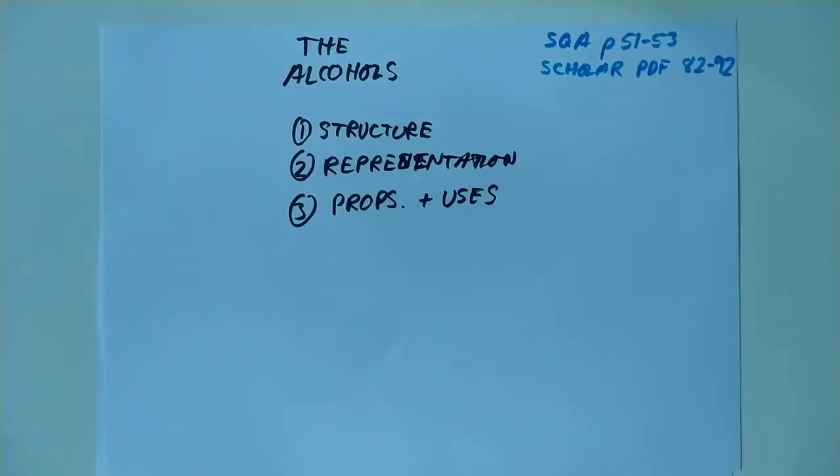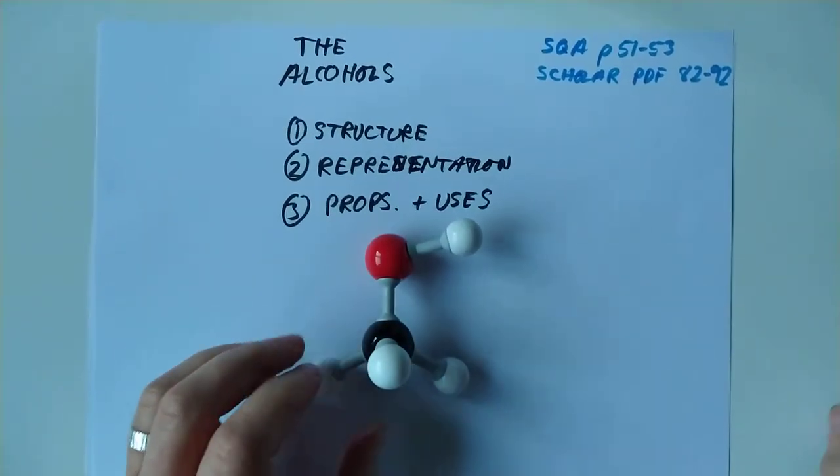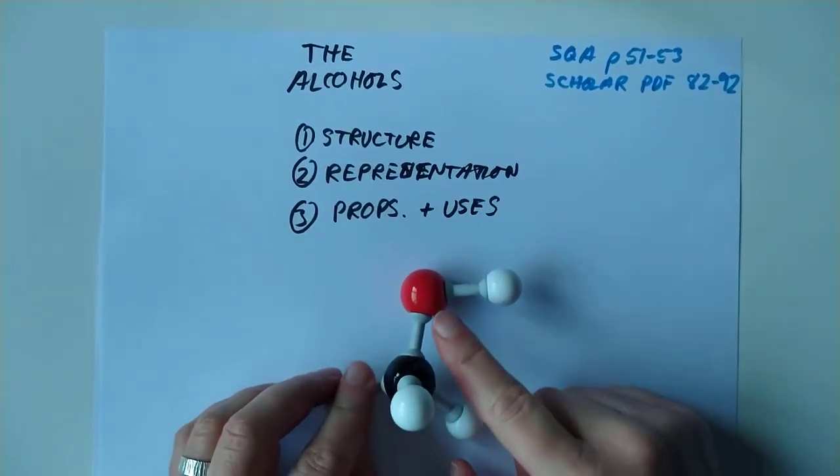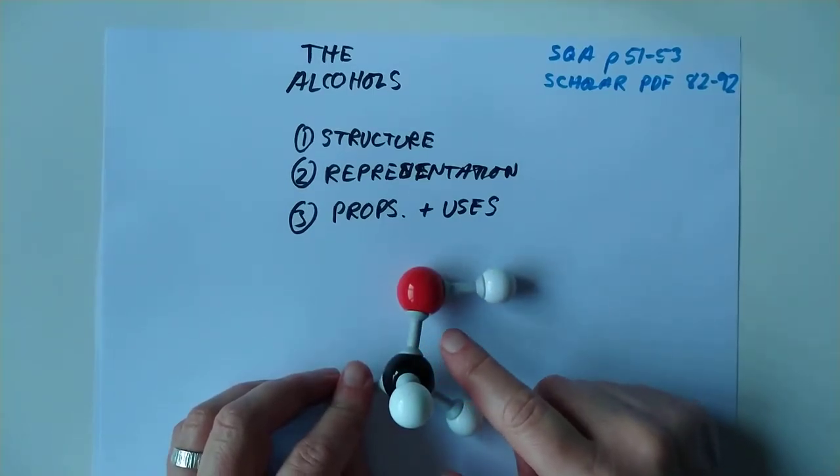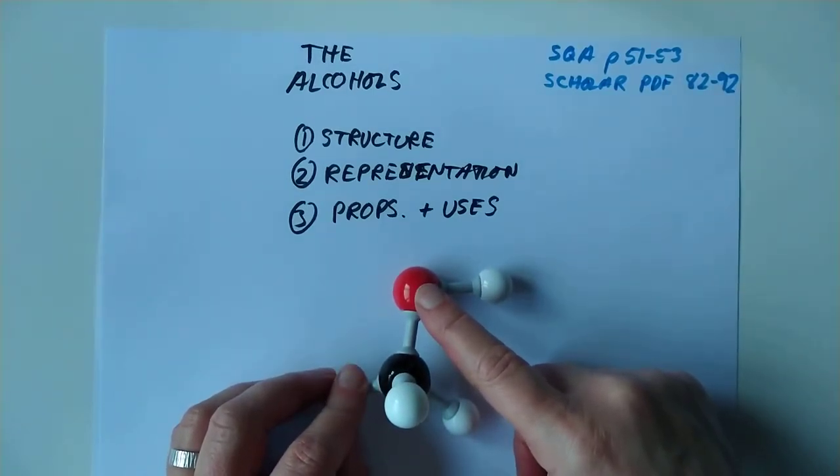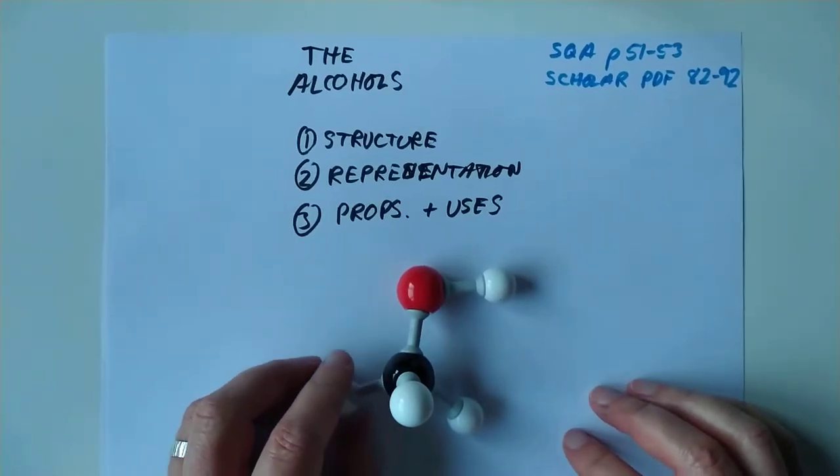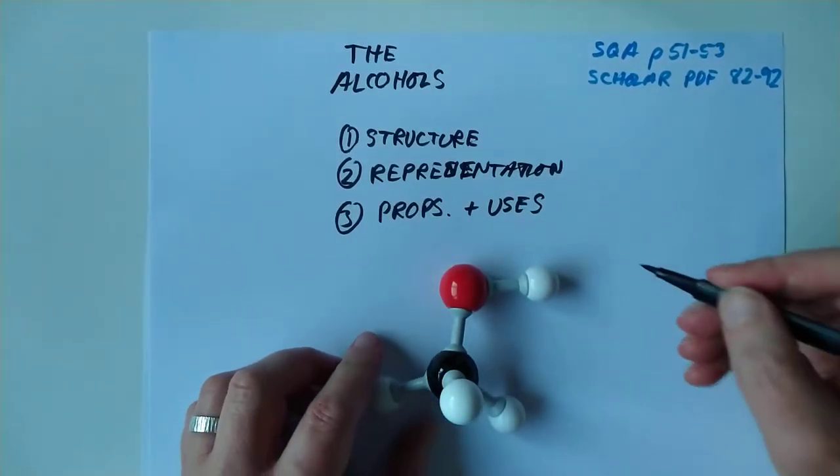This is a brand new homologous series. Let me introduce you to the simplest member of the series. One carbon, three hydrogens here, and an oxygen, and then another hydrogen. It's almost like methane where you have inserted an oxygen between the carbon and the hydrogen. And it's got a name, and it's called methanol.